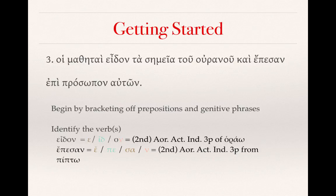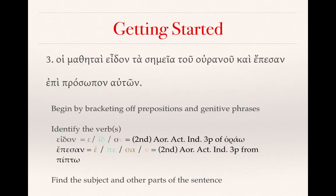The second verb is epesan. It has the augment at the beginning, a modified stem with pep-, and then the sigma-alpha and -an ending. This is from the verb pipto, meaning 'I fall,' and is also a second aorist active indicative third plural. Notably, this is an example of the exception Clayton Croy mentioned: a second aorist that has first aorist-style endings with sigma-alpha and then the personal ending.